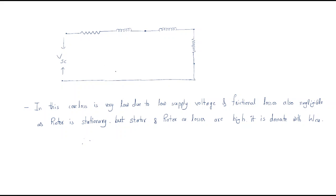To understand the calculations of the block rotor test: we apply voltage VSC, current I1. The stator has resistance R1 and reactance jX1. Current flows to the rotor winding which has reactance jX2 and rotor resistance R2 dash, where R2 dash equals R2 divided by slip s. In this test, core loss is very low due to the low applied voltage.